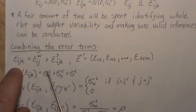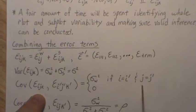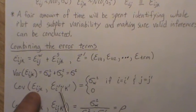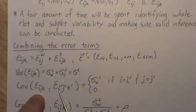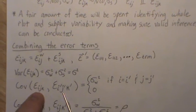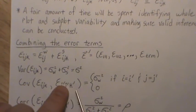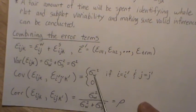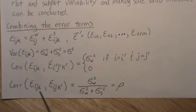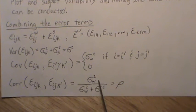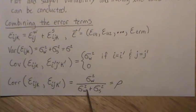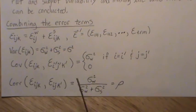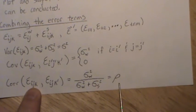The covariance between any two errors: if I and J are not equal, they're independent and the covariance is zero. But if I equals I-prime and J equals J-prime, the covariance is sigma_w squared — the whole plot variance. The correlation between any two errors is the covariance divided by the variance, which we call rho, and it only applies when I and J are the same; otherwise the correlation is zero.